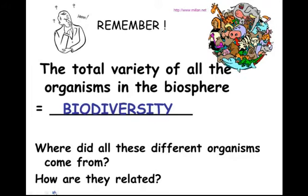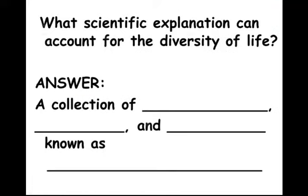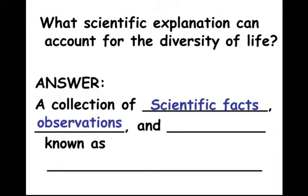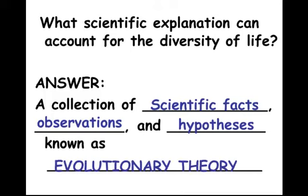He came up with an explanation and a theory about how new species come to be. When coming up with a scientific theory to answer that question of where living things come from, we use the scientific method — looking at scientific facts, collecting evidence, making observations, and eventually putting those ideas together to form a hypothesis. This ultimately became what we call the theory of evolution, or evolutionary theory. We're going to look at the scientific evidence and see what supports it.